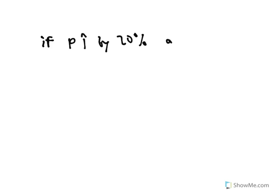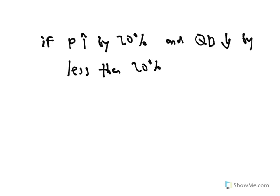Finally, if price increases by 20% and quantity demanded decreases by less than 20%, this is called inelastic demand. This is the idea of someone not being very sensitive to a price change. Like me and an iPhone — if Apple raises the price, I'm still going to buy it. Or consider a necessity like food: if Walmart raises the price of food items you buy, you're probably going to still buy roughly the same amount, because you need food. It's a necessity.